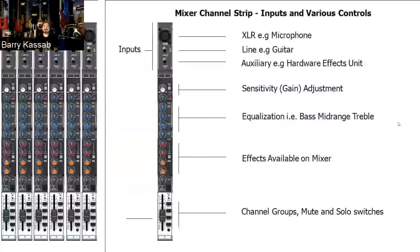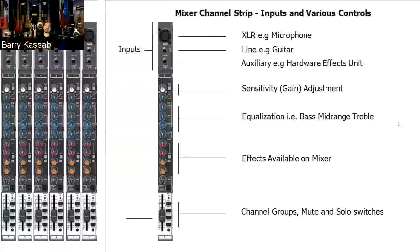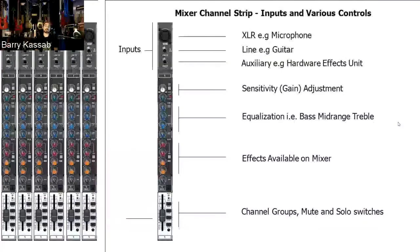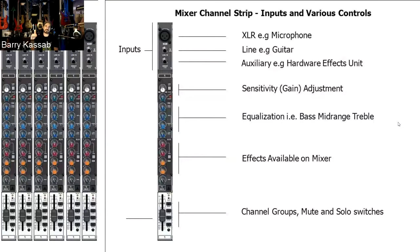Some input channels have a pad switch that adds an attenuation of 20 dB. This lowers the input an extra 20 dB and is suitable for high-level sources like keyboards or amplified guitar effects — signals that are already amplified and don't need the preamp the way a microphone does. You lower your gain to zero, add the pad, and if the level isn't enough, increase the gain slightly to get the right output relative to your level.